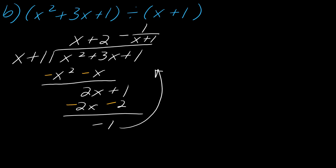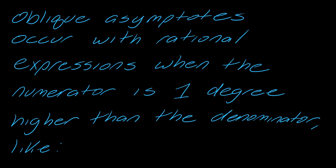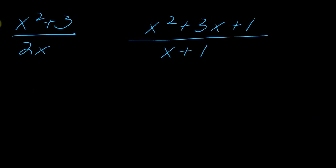So now let's pivot to oblique asymptotes. Oblique asymptotes occur with rational expressions when the numerator is 1 degree higher than the denominator, like these. So here, the degree of the top is 2, the degree of the bottom is 1. So that's prime for that. This is also a degree of 2 and a degree of 1. So we're all good there.